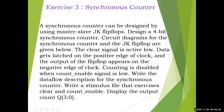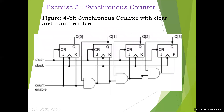The requirements are: write the data flow description for the synchronous counter, write a stimulus file that exercises clear and count enable, and display the output count. In the master-slave JK flip-flop, the clear and count enable signals — when made low (zero) — the counter will act, and if it is one, the counter will be reset. Both circuit diagrams are necessary to build the program: the 4-bit synchronous counter with clear and count enable.